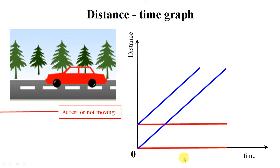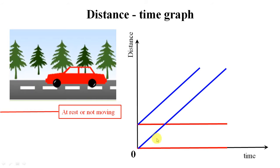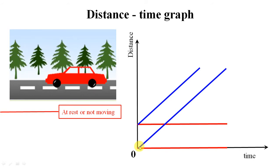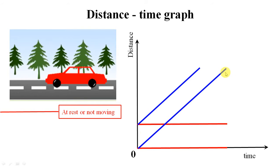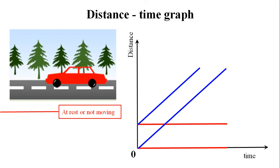As time progresses, the car covers equal distances in equal intervals of time, meaning distance is increasing at a constant rate. Distance traveled divided by time is constant, so the body is traveling at uniform speed — it is under uniform motion. Hence, if the distance-time graph is a straight line, the body is under uniform motion.